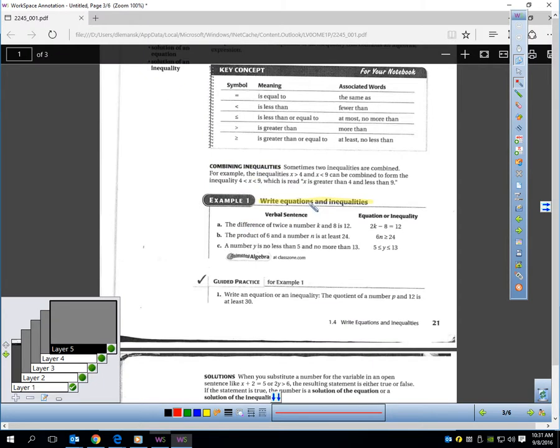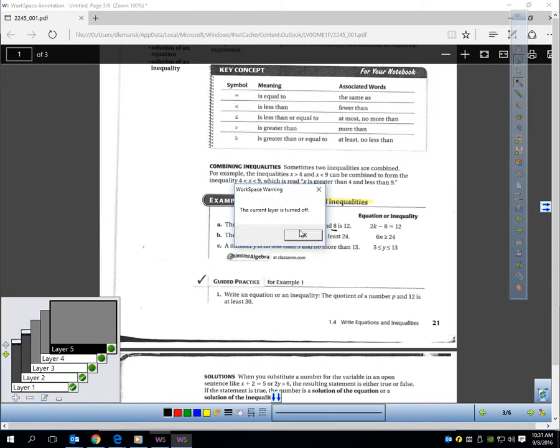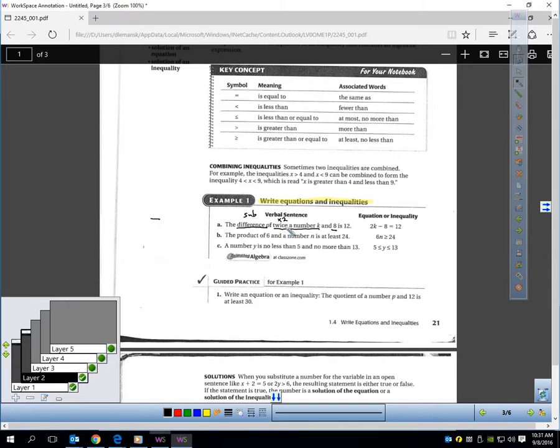Let's do some practice of writing equations or inequalities, changing the words into algebraic open sentences. So, this first one, the difference of twice a number k and 8 is 12. So, let's make sure we're careful here. Difference means subtraction. So, there's a subtraction in this problem. I'm going to turn my layer on. Twice a number k and 8. So, I'm subtracting these two things. Let me circle them. I'm subtracting twice k, which means take k times 2 and 8. Well, let me write that out. Here's twice k, and here's 8. If I subtract those two, I should be getting 12. Is 12 means equals 12.